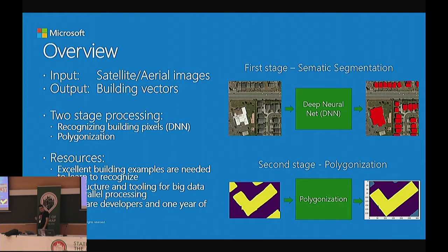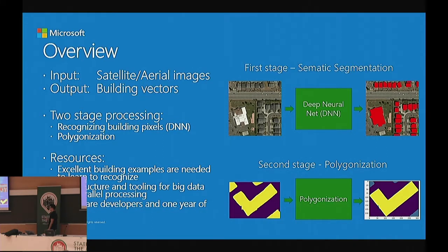What is actually needed in terms of resources for this to be done? You need excellent building labels so your algorithm can learn what a building looks like on the image. You need great and big infrastructure to run and process all of this data. Regarding human resources, in our case it was three software developers working on this for one year. We had some previous experience with machine learning but fairly limited with deep learning, though in this one year we picked up a lot of it.